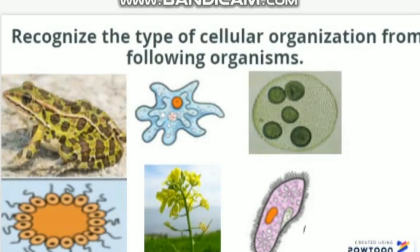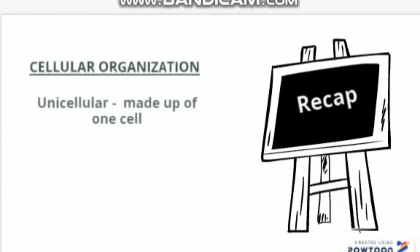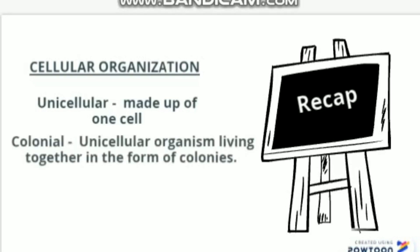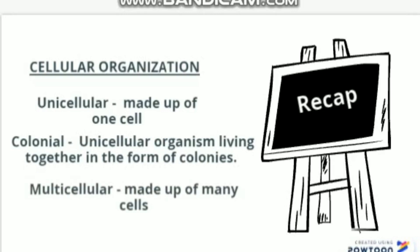There is an activity for you: recognize the type of cellular organization from the following organisms. Take your time. Now let's have a recap — unicellular organisms are made up of one cell; colonial organisms are unicellular but they live together in the form of colonies; and multicellular organisms are made up of many cells.